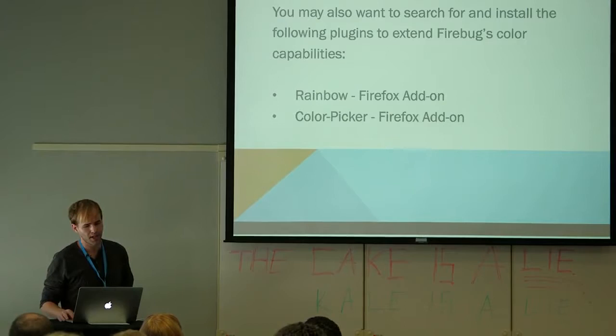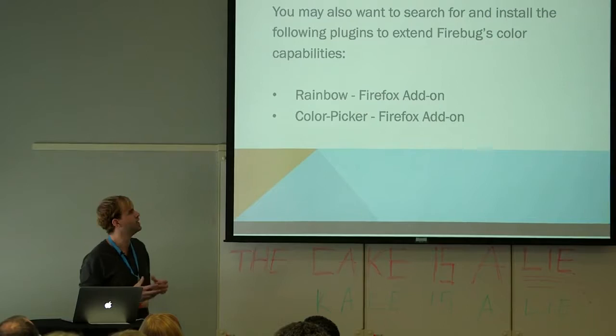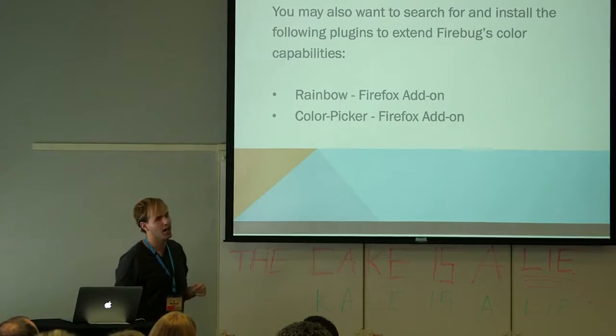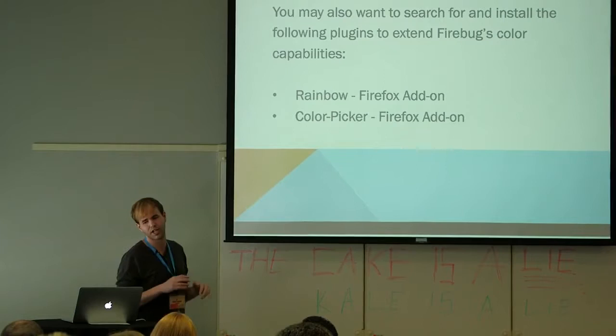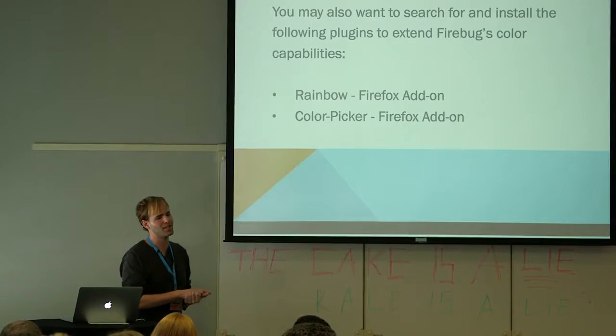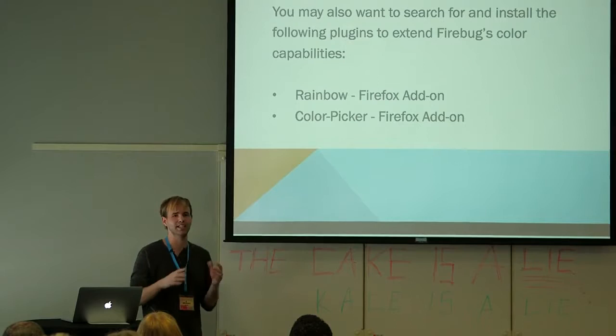There are some add-ons to Firebug. Firebug off the bat comes pretty lean, but two I recommend are Rainbow and Color Picker. You add them the same way — Google 'Download Rainbow for Firefox' or 'Download Color Picker for Firefox.' They extend Firebug to have easy color selection ability. Instead of just typing in 'blue,' you can get the exact hex code you want by selecting a color and dragging it. I'll show you that in a minute.